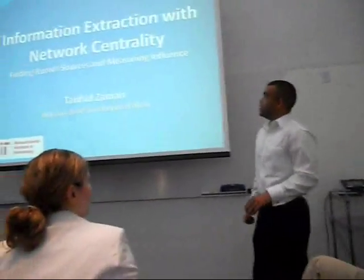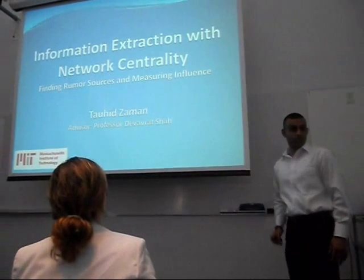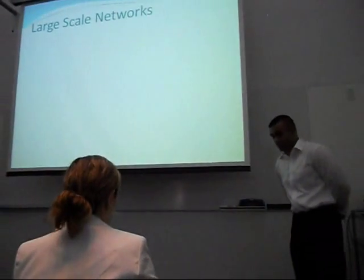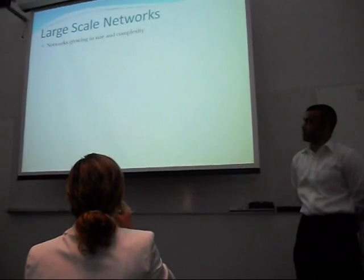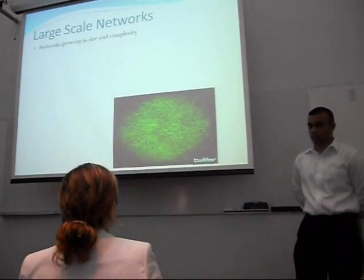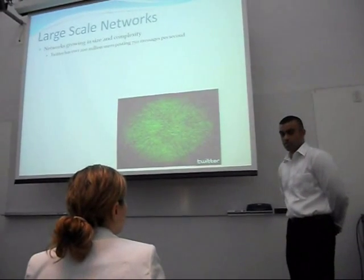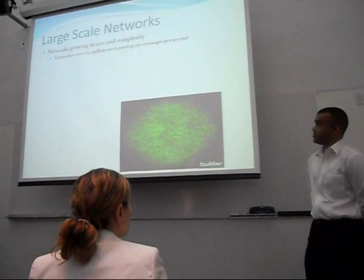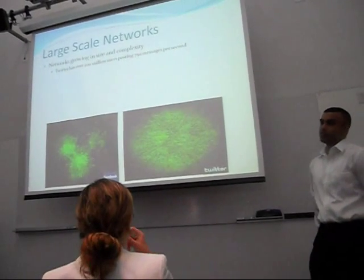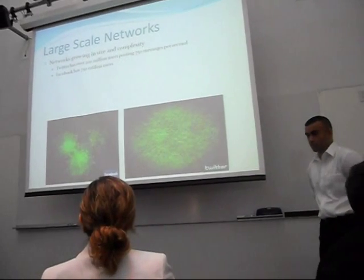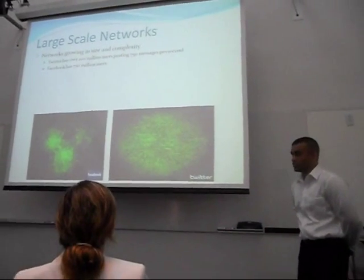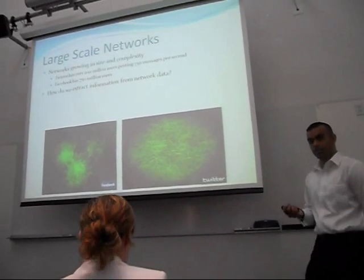Alright, so today I'll be talking about information interaction with network centrality: finding rumor sources and measuring influence. The main focus of this talk will be large-scale networks. In the world today, networks are getting incredibly large and incredibly complex, especially social networks. For example, here's a portion of Twitter — a network with over 200 million users posting tweets at the rate of about 750 per second. Another well-known social network is Facebook, with over 750 million users. Buried in these large networks is actually useful information, and the question is how do you mine this complex data to extract that useful information.